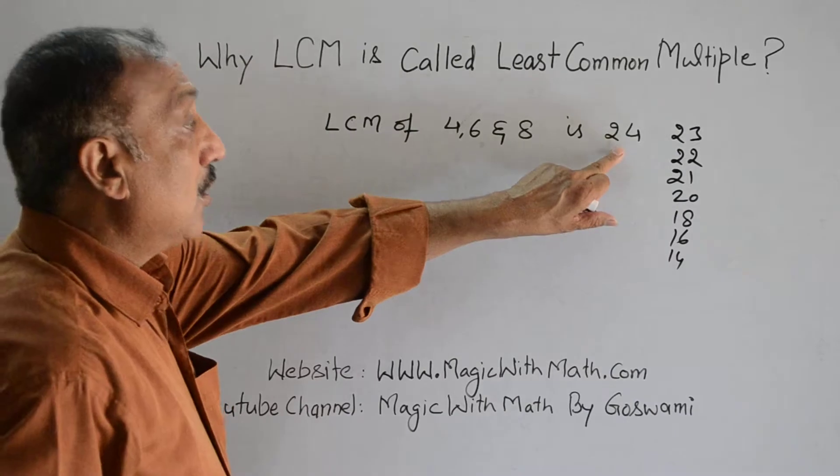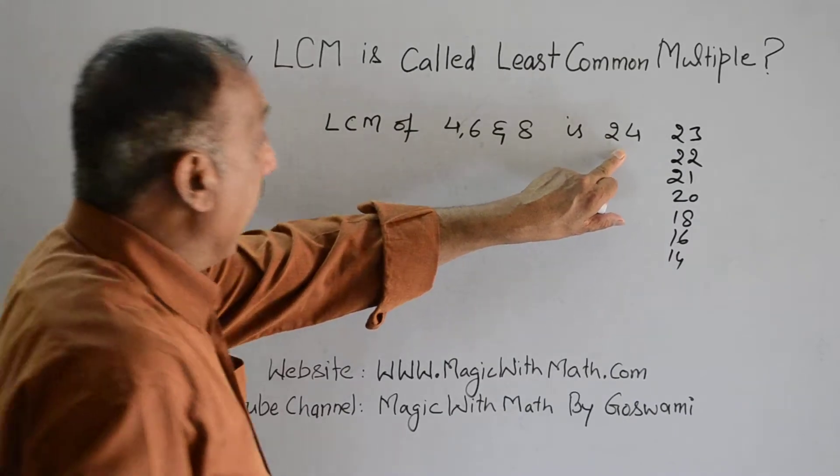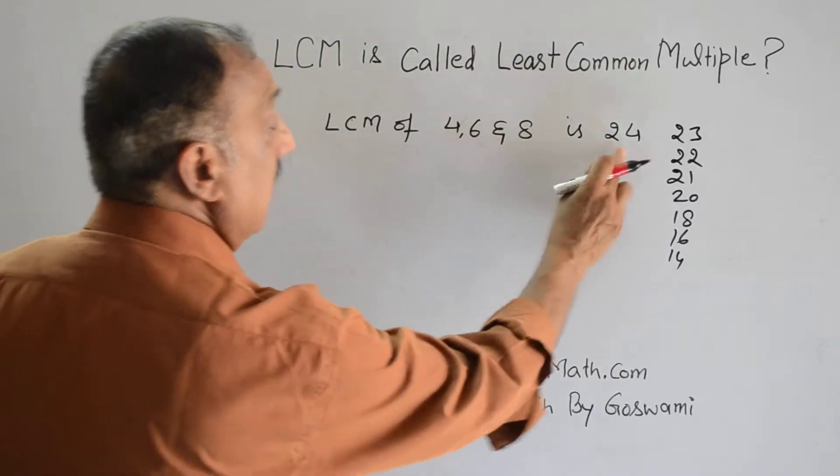No number smaller than 24 can be divided by 4, 6, and 8. This is the smallest number.